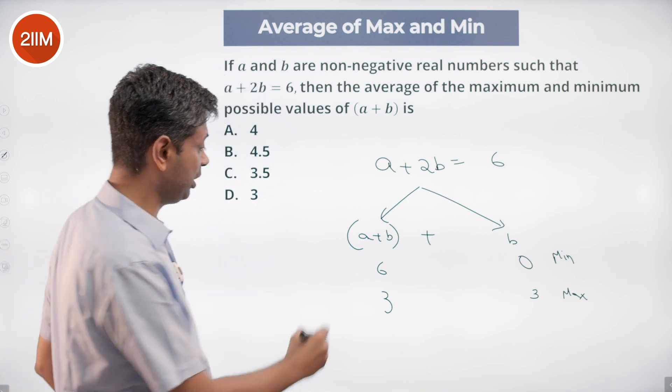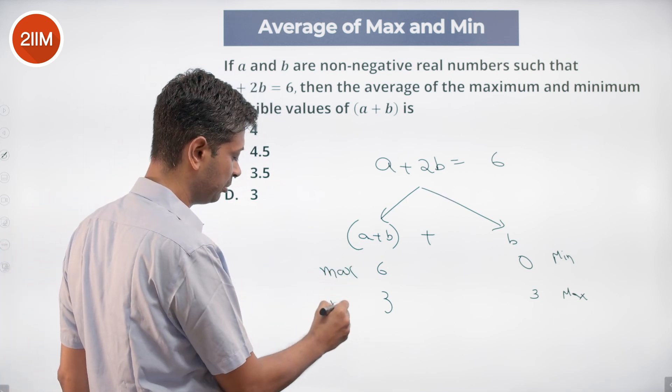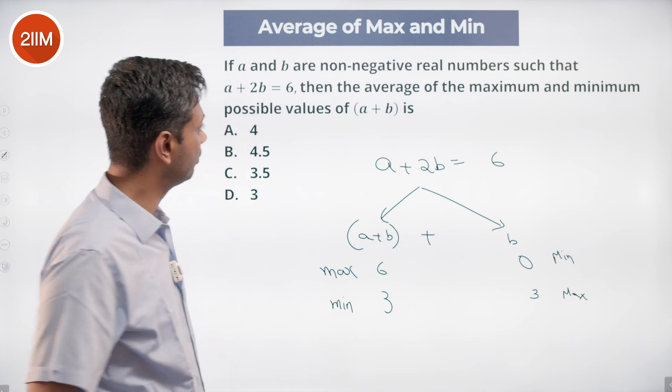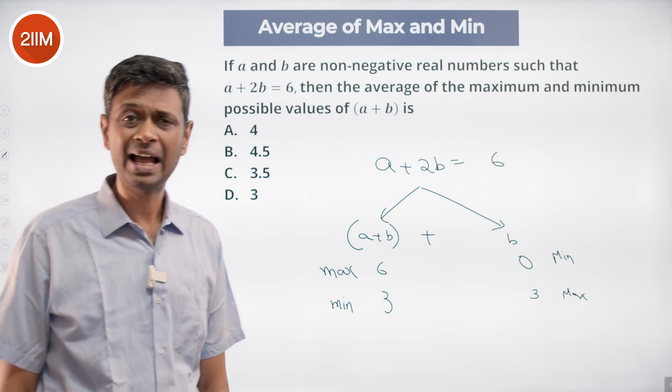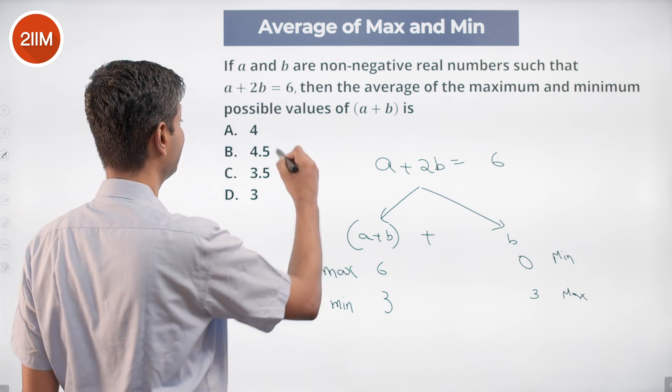Or a plus b maximum value is 6. A plus b minimum value is 3. We want to find the average of the maximum and minimum possible values of a plus b. Average of 6 and 3: 6 plus 3, 9 by 2, 4 and a half. Done.